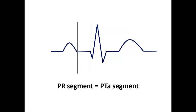Another name or terminology for the PR segment found in some literature is the PTA segment. I mention this terminology so you are familiar with it when reading about atrial infarction. In this video, we will use the term PR segment, as it is much more common and easily understood — it represents the straight segment between the end of the P wave and the start of the QRS complex.